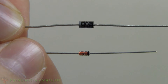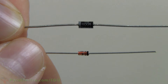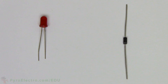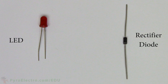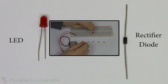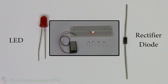Diodes are the precursor to the invention of the transistor. They actually consist of similar material as transistors, however they only have about half. Two of the most common types of diodes are called the LED, which is famous for its light-emitting properties, and the rectifier diode, which is commonly used for converting AC electricity into DC electricity. We already used the LED a few times in previous experiments, so let's use it once more to get a better feeling for how it works.